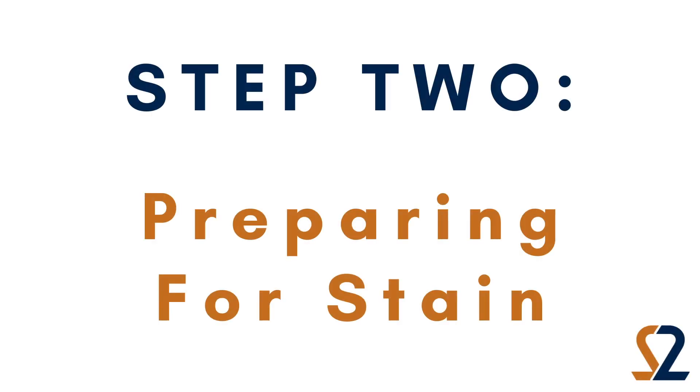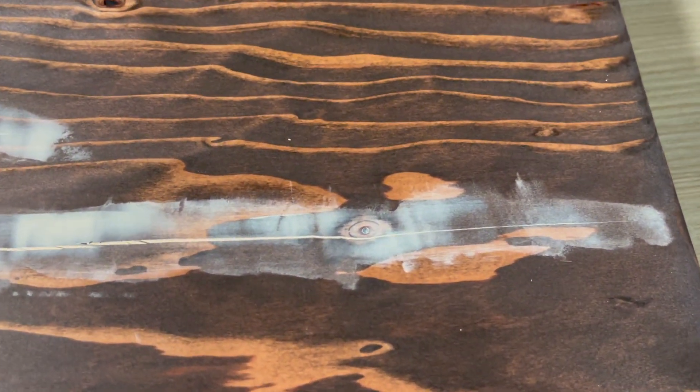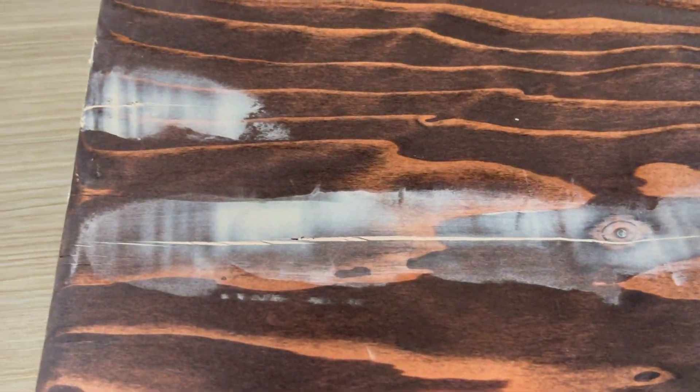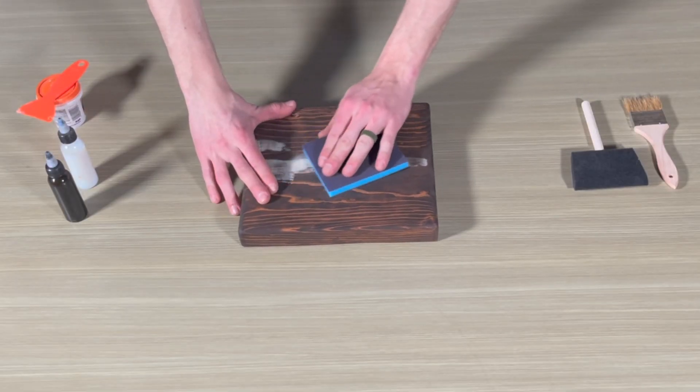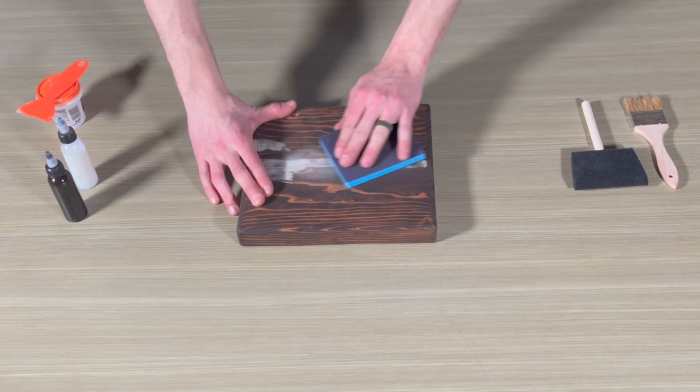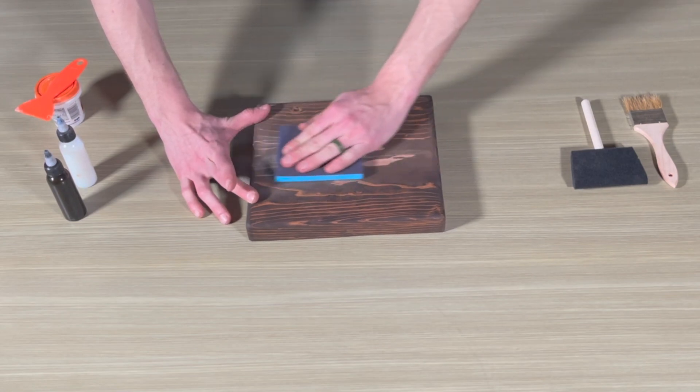Step 2. Preparing for stain. Once your wood filler is dry, you are now able to sand the excess wood filler off. Take the 400 grit sanding pad and lightly sand the area with wood filler until there's only wood filler in the cracks or knots.